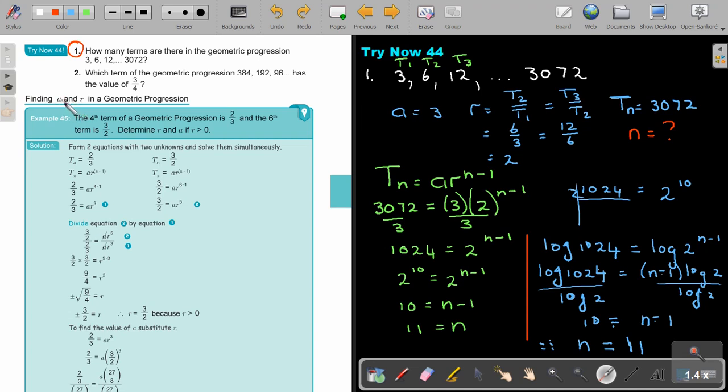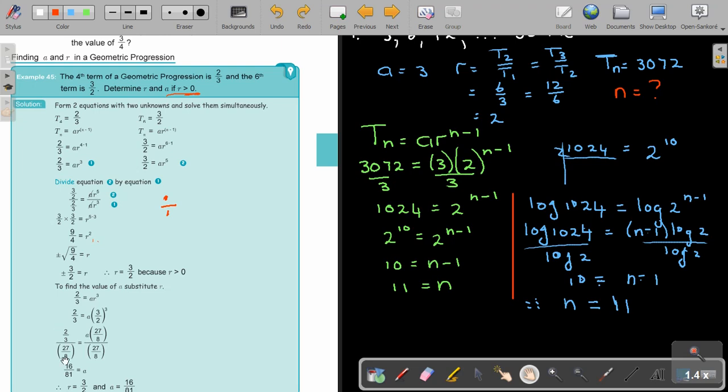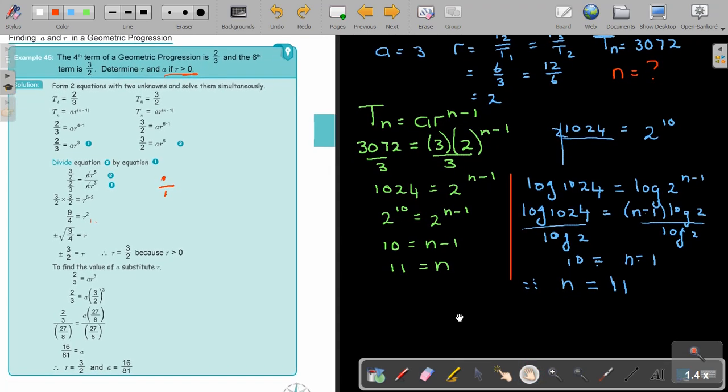In this case it's the same as the previous. I'm going to find A and R. The fourth term is given and the sixth term is given. Determine R if R is bigger than 0. Form two equations with two unknowns and solve it simultaneously, just like we did in APs. The only difference is that we don't add or subtract to cancel out - we are going to divide. You divide, then you subtract the exponents or indices. 5 minus 3 is 2. Take the square root plus or minus. But remember, the value will be positive, so R is only the positive one. Then you find the value of A by substitution, just like we always do.